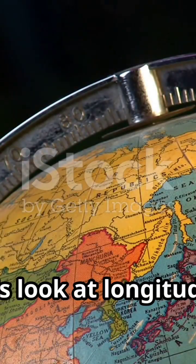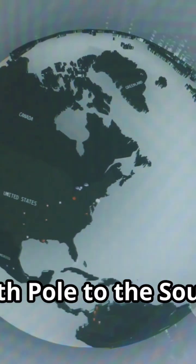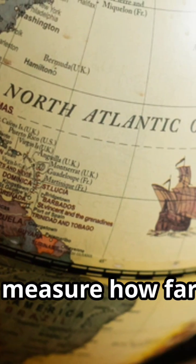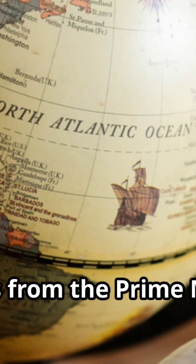Now, let's look at longitudes. These are vertical lines that run from the north pole to the south pole. They help us measure how far east or west a place is from the prime meridian.